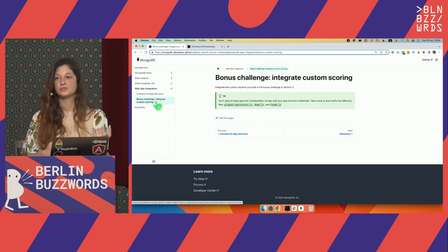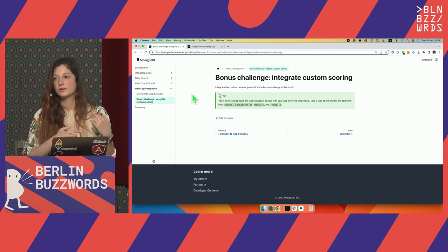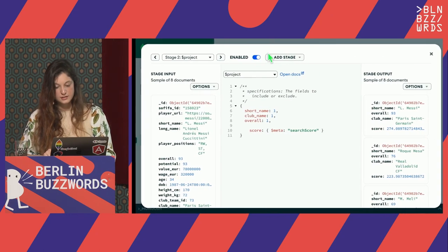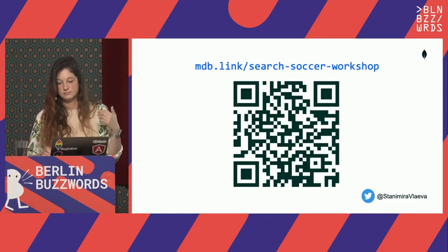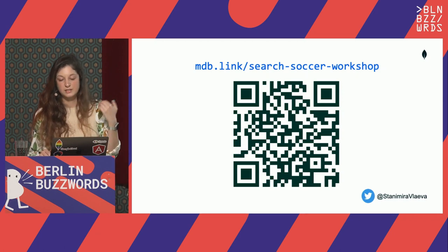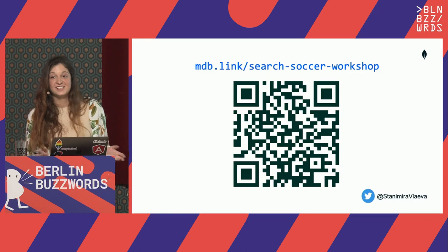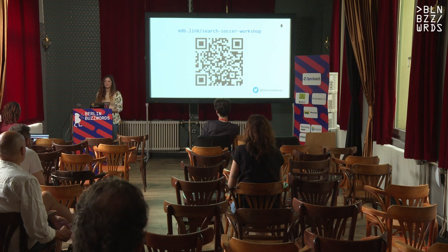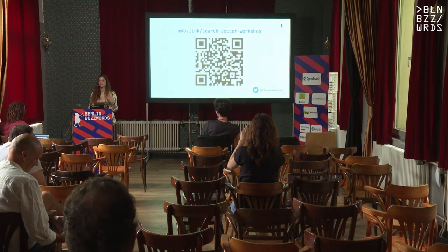There is also a bonus challenge if you try this again afterwards: you can implement custom scoring by connecting your custom scoring function from the previous bonus challenge. That's everything I wanted to show you today. Let's wrap this up. This is the link for the workshop — please scan it so I can come again next year. I hope you enjoyed it. I'll be here, so talk to me after the session if you have any questions.